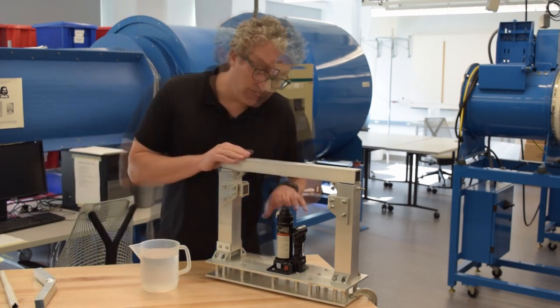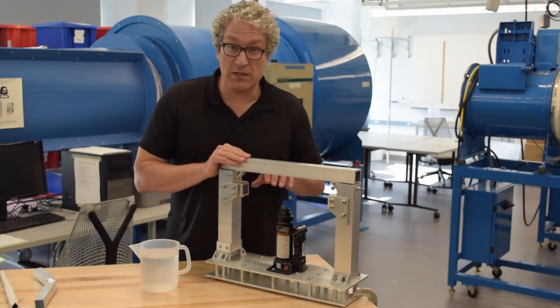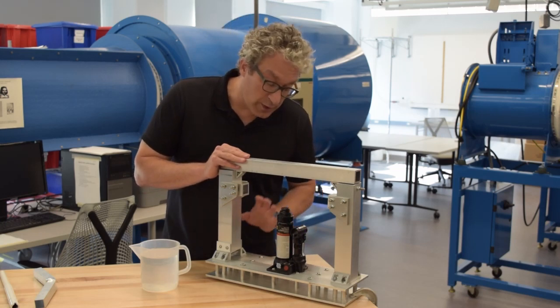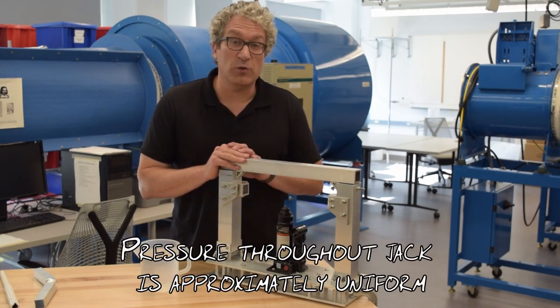All that it says is that if pressure is changing, it's only changing in the z direction. And there's very little z here. And what that means is for a system like this, we can approximate the pressure as being uniform.